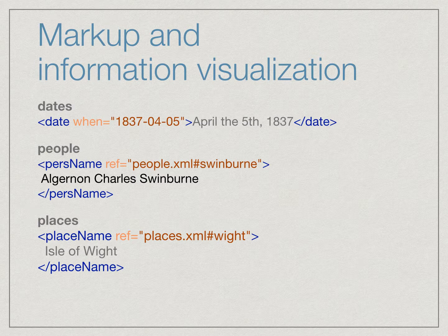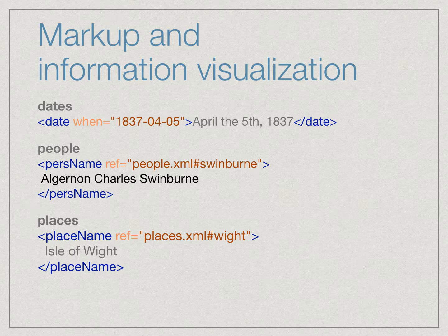Given that this is a course on information visualization, I wanted to say a few words about markup and information visualization. As we see in these examples, markup can identify many of the things we're interested in visualizing when we visualize data. Some common things we might be interested in include dates, people, and places.